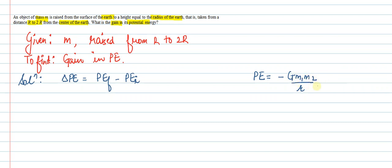PE final will be equal to minus G m M by 2r, where m is the mass of the body, capital M is the mass of the Earth, and 2r is the final distance. PE initial equals minus G m M by r. So we will be getting G m M by r minus G m M by 2r.